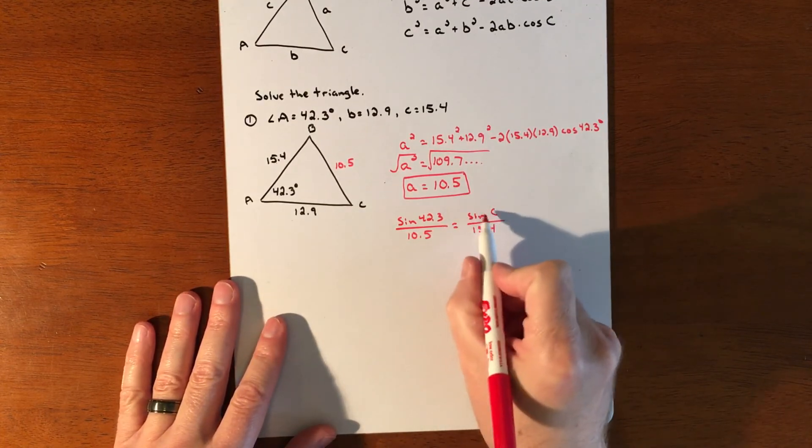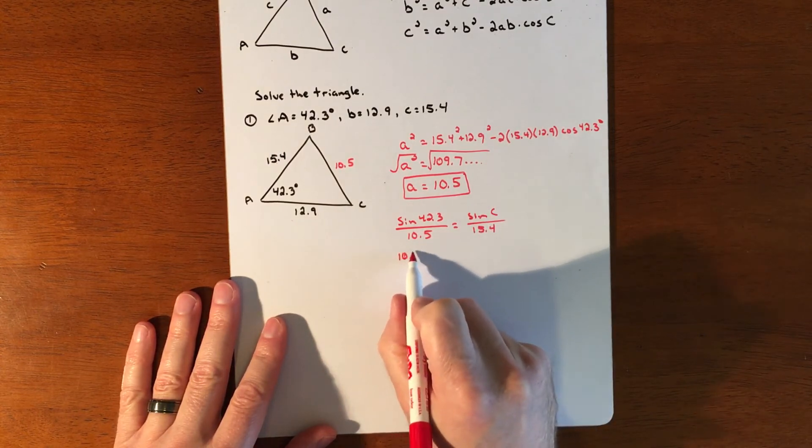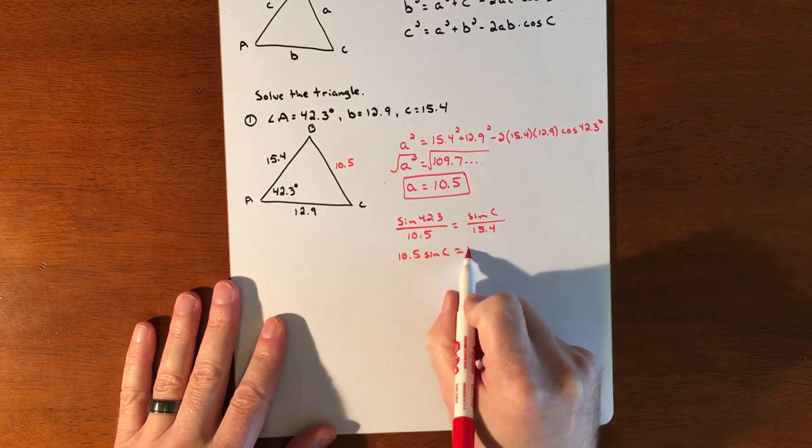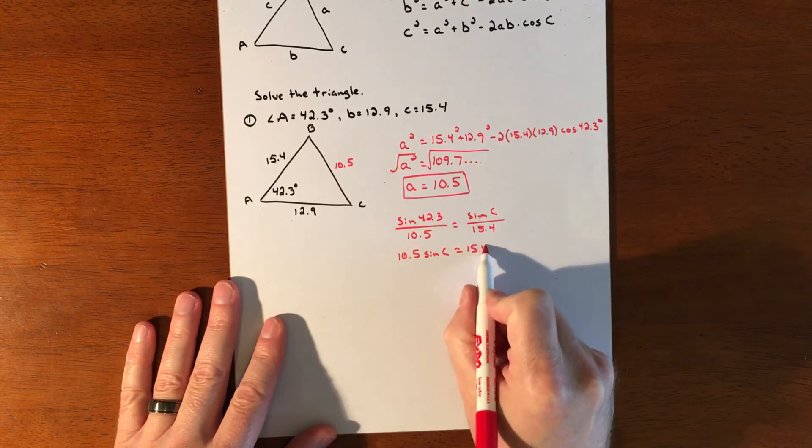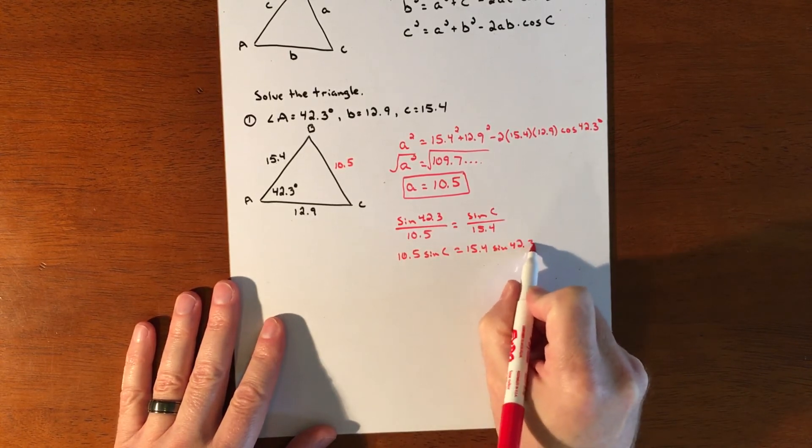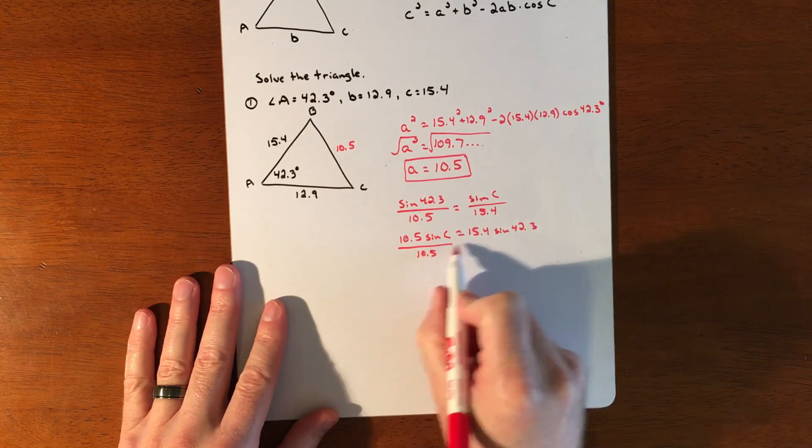And then we can cross multiply to solve this. So eventually we're going to do inverse sine, but we'll cross multiply and we have 10.5 times sine of c equals this cross product of 15.4 sine of 42.3. We're going to divide by 10.5.